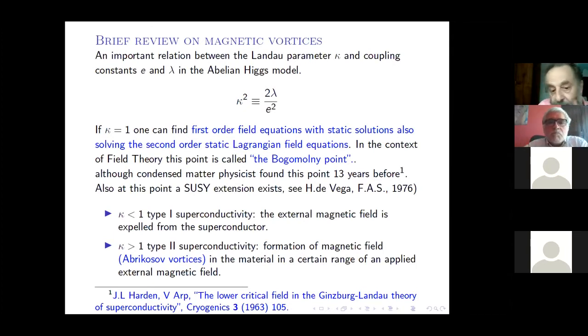Because of the 1976 Bogomolny paper, but in condensed matter physics it was found 13 years before. I put the reference because not many people know that the Bogomolny equations were discovered in 1963 in condensed matter, publishing in Cryogenics journal. In condensed matter, kappa is known as the lambda parameter. Another important thing to obtain first order equations, Bogomolny type, is that at this point you can find an N equals 2 supersymmetric extension.